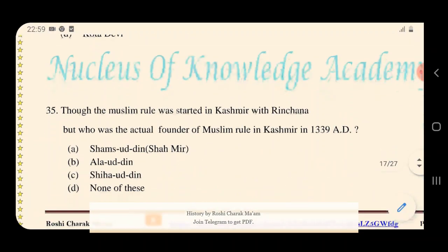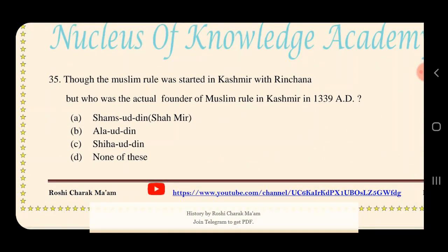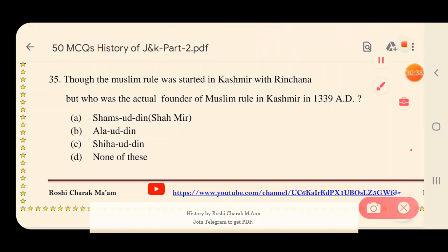Question 35: Though Muslim rule started in Kashmir with Rinchan, who was the actual founder of Muslim rule in Kashmir in 1339 AD? Options: A) Shamsuddin Shahmeer, B) Alauddin, C) Shihabuddin, D) None of these. The answer is option A — Shamsuddin, also known as Shah Mir. He is considered the actual founder of Muslim rule in Kashmir.